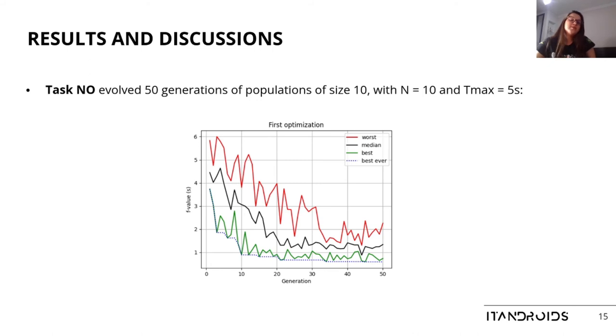Regarding the results, task no opponents evolved 50 generations of populations of size 10, with N equals 10 and T max equals 5 seconds. The plot shows the worst, medium, best, and best ever fitness values obtained per generation. The best ever fitness value was around 0.6 seconds.